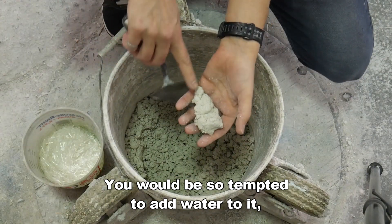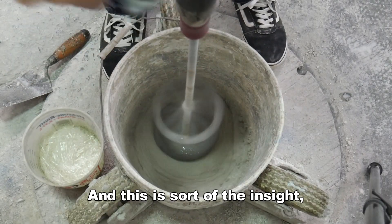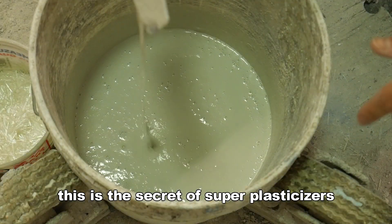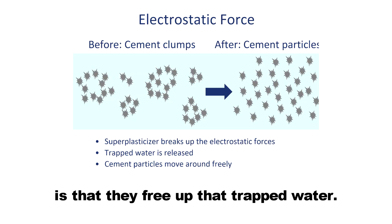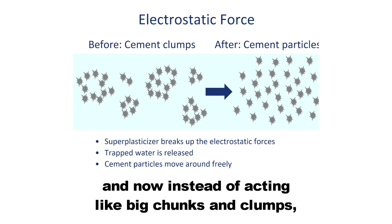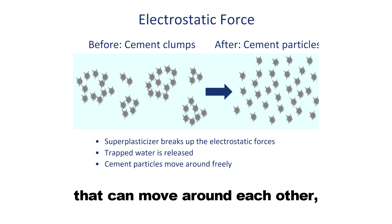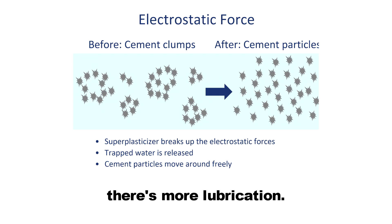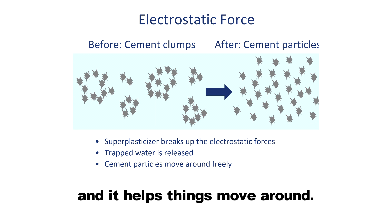You would be so tempted to add water to it. But obviously, just by adding some powder, there was more than enough water in there. This is the secret of superplasticizers, or water reducers in general — they free up that trapped water. They break up those cement particles, and now instead of acting like big clumps, they act more like separate discrete particles that can move around each other. Because they're not trapping water, there's more lubrication. The water is like the grease of your ingredients and it helps things move around.